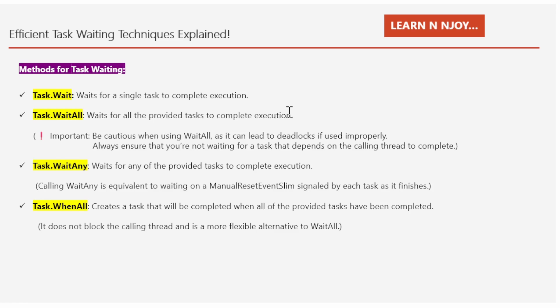Now let's talk about handling exceptions in Task.WaitAll. Even if one or more tasks throw an unhandled exception, Task.WaitAll still waits for every task to finish. It then re-throws a single AggregateException containing exceptions from each faulted task. One important thing to keep in mind: WaitAll can lead to a deadlock if used improperly. Always ensure that you are not waiting for a task that depends on the calling thread to complete.